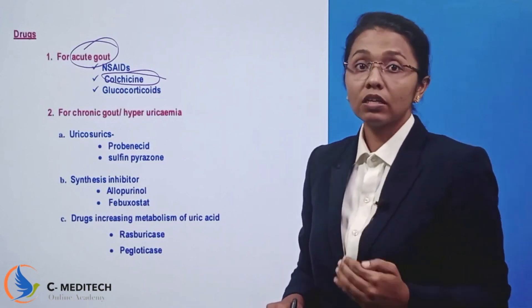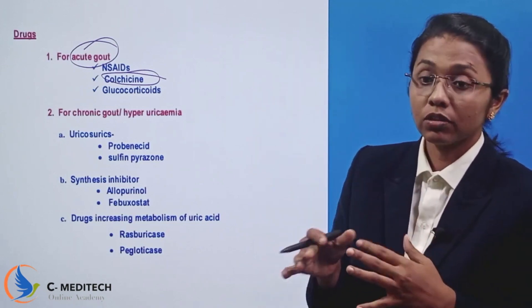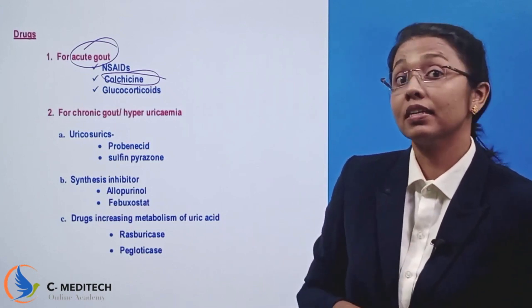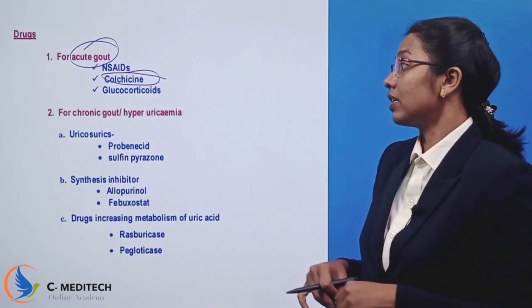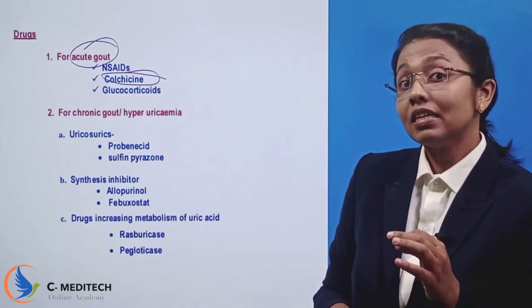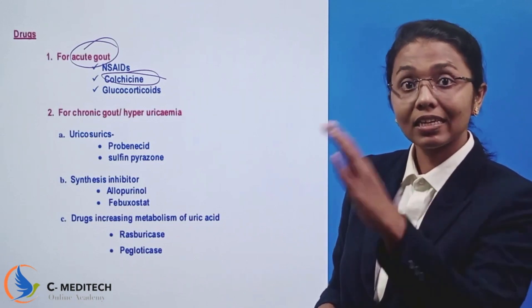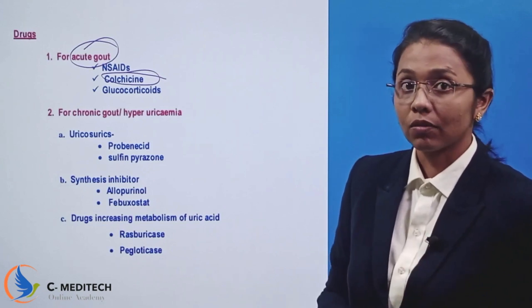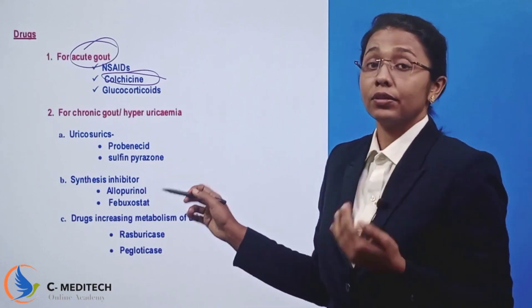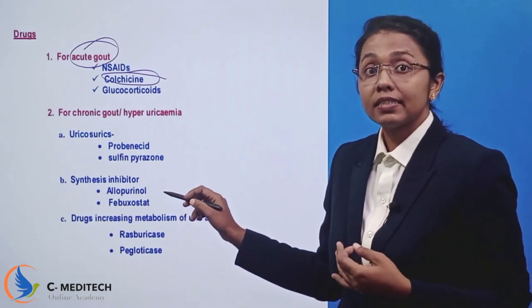Next, we are moving on to chronic gout. Chronic gout is because of hyperuricemia — continuous gout. If you have repeated gout attacks you will have pain. For chronic gout, we have two categories: uricosuric agents and uric acid synthesis inhibitors. Uricosuric agents promote excretion of uric acid, while synthesis inhibitors block uric acid production.